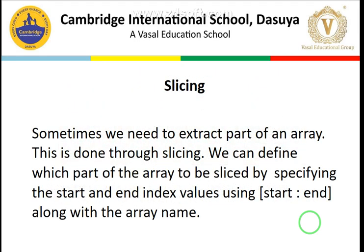Another important topic we discussed was slicing. Slicing is basically cutting down the array into a smaller sub-part. Sometimes we need to extract only a part of the array, not the full array, and this is done through slicing. We can define the part to be sliced by specifying the start and end index values, and sometimes also a third parameter — the step value. Practice is very vital for learning all these topics.